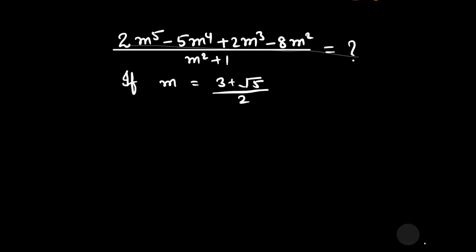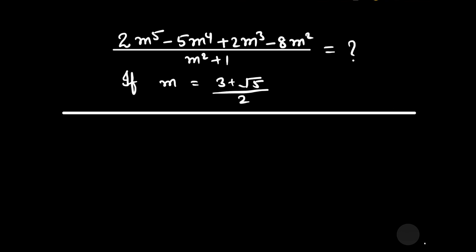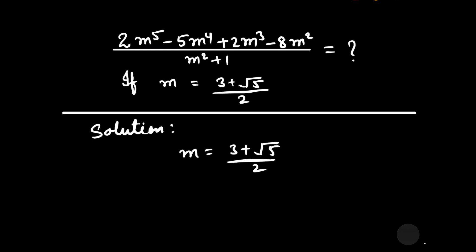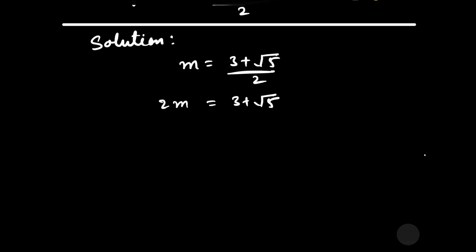Let us start to solve this question. It is given that m equals 3 plus square root of 5, divided by 2, and we have to find the value of the given expression. Let us rearrange: m = (3 + √5) / 2, so 2m = 3 + √5. Transposing 3 to the LHS, we get 2m minus 3 = √5.